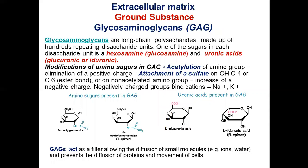Glycosaminoglycans are long-chain polysaccharides made up of hundreds of repeated disaccharide units. Modification of amino sugars in glycosaminoglycan structure occurs via acetylation and attachment of sulfate groups. Glycosaminoglycans increase negatively charged groups and bind cations such as sodium and potassium. They act as filters, allowing diffusion of small molecules such as ions and water while preventing the diffusion of proteins and movement of cells.